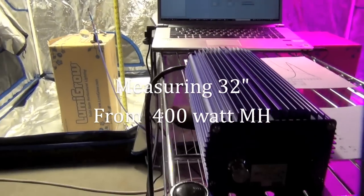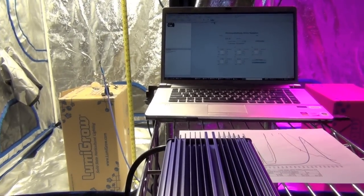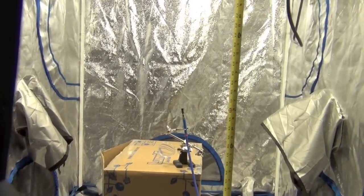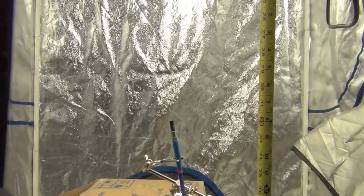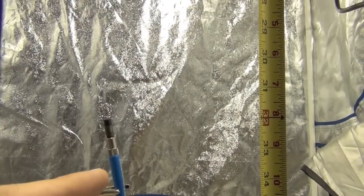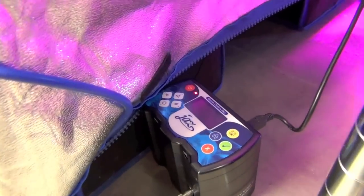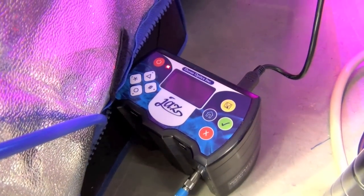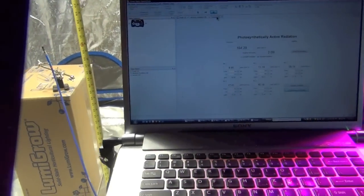Right now we're running this Lumatec on the superlumen setting. Our spectral radiometer is 32 inches from the light source, just as we had on the Lumigro 330. There's our 400 watt metal halide, an I4 deluxe. This is our fiber optic sensor hooked into a very expensive spectral radiometer, and here's the readout. This is live.